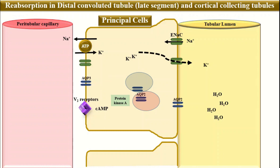When aquaporin 2 and aquaporin 3 channels become embedded on the apical and basal sides of the principal cells, they allow reabsorption of water from the tubular lumen into the peritubular capillaries. In this way, these segments of the nephron reabsorb water in the presence of antidiuretic hormone, leading to the formation of concentrated urine and retention of water in the body. To summarize, the principal cells of the late distal convoluted tubule and cortical collecting tubule reabsorb sodium, secrete potassium, and reabsorb water in the presence of antidiuretic hormone.